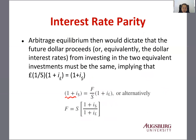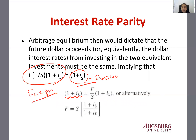The domestic investment proceeds should equal the foreign investment proceeds because there is no arbitrage. If they are not equal, then there is arbitrage. You can rewrite this as: one plus the domestic interest rate equals the forward rate divided by the spot rate, times one plus the foreign interest rate. Rearranging: the forward rate equals the spot rate times one plus the domestic interest rate divided by one plus the foreign interest rate. So the forward rate is determined by the spot rate, the domestic interest rate, and the foreign interest rate.